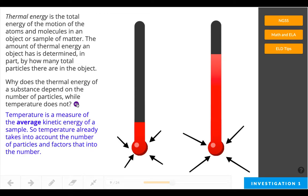We learned about this before. Temperature is a measure of the average kinetic energy of the sample. So temperature already takes into account the number of particles and factors that into the number, while thermal energy is the total energy. So we take the amount of energy of each particle and add that all together.